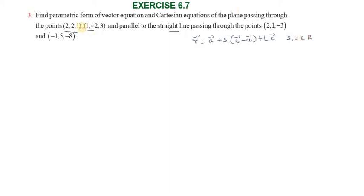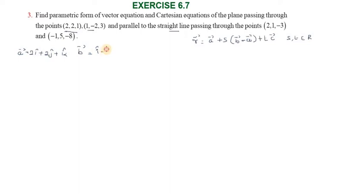Here, a vector equals 2i cap plus 2j cap plus k cap. And b vector equals i cap minus 2j cap plus 3k cap. So a vector and b vector are ready, and now we need c vector.